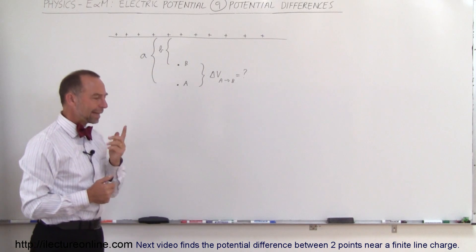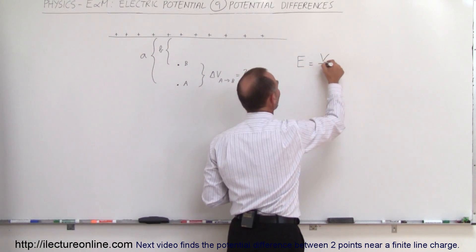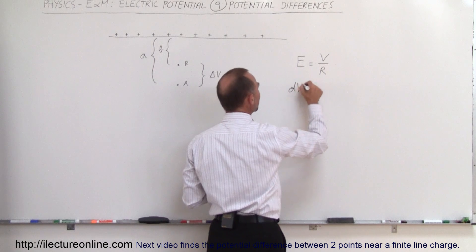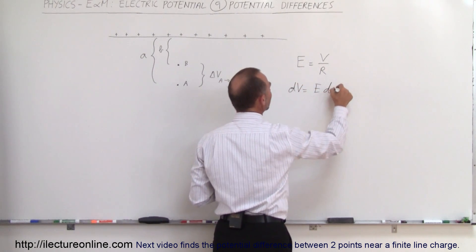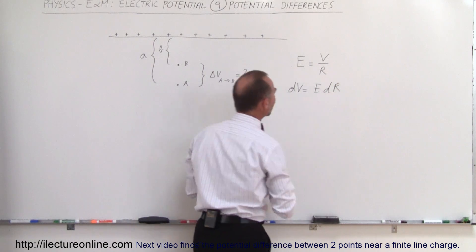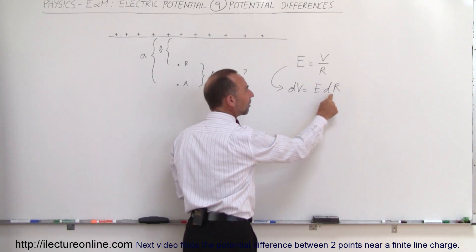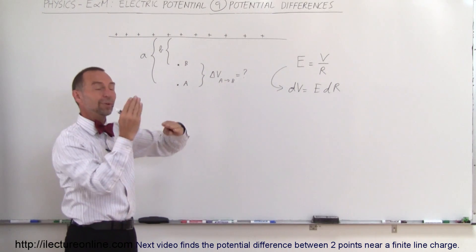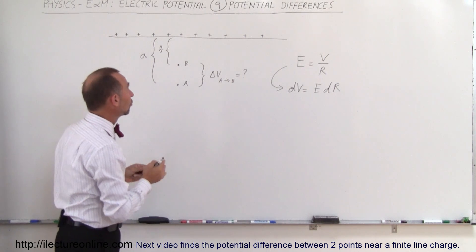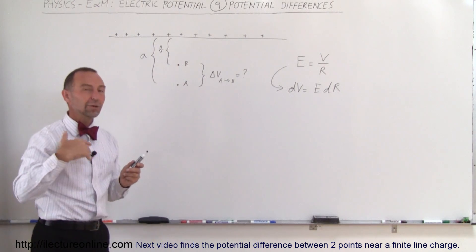So how do we go about doing that? Think about the principle here. We know that the electric field magnitude is equal to the voltage divided by the distance traveled. Moving R across, we can say that the change in potential, or dV, is equal to E times dR. The potential will change as a function of the strength of the field and how far we move along that field. If you move perpendicular to the electric field, the potential will not change. If you move in the same direction as the electric field, the potential will change.